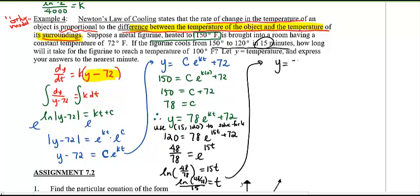And if I really wanted to have a nice equation then, y equals 78 e to the k. I'm sorry, I shouldn't have said t. That was t, wasn't it? That should be k. And my k value is natural log of 48 over 78 divided by 15 times t. That's all an exponent. Plus 72. And this is the equation of this scenario.